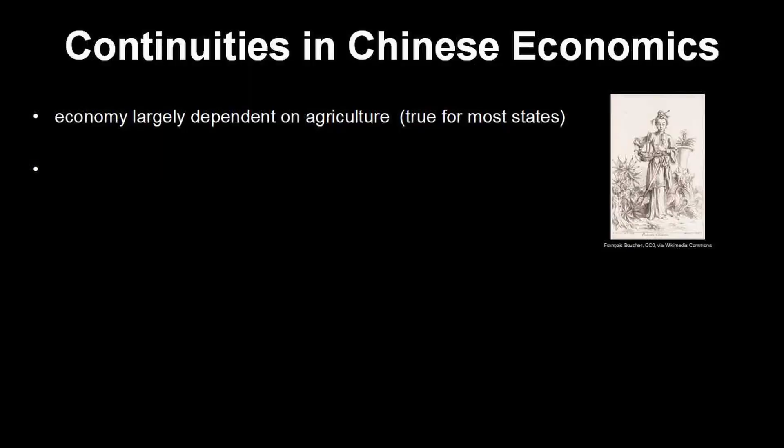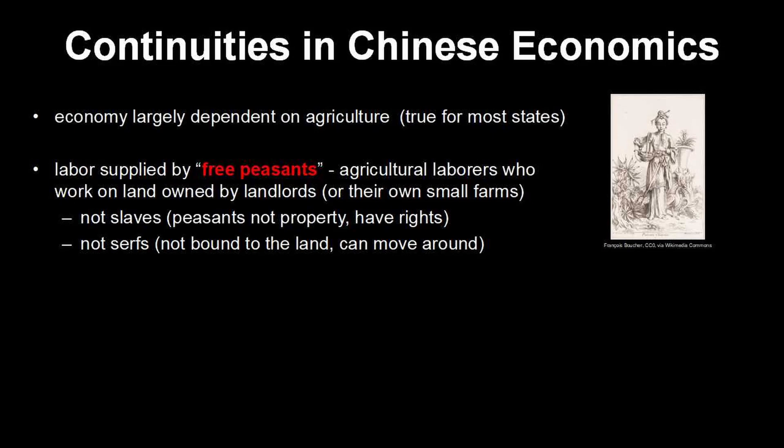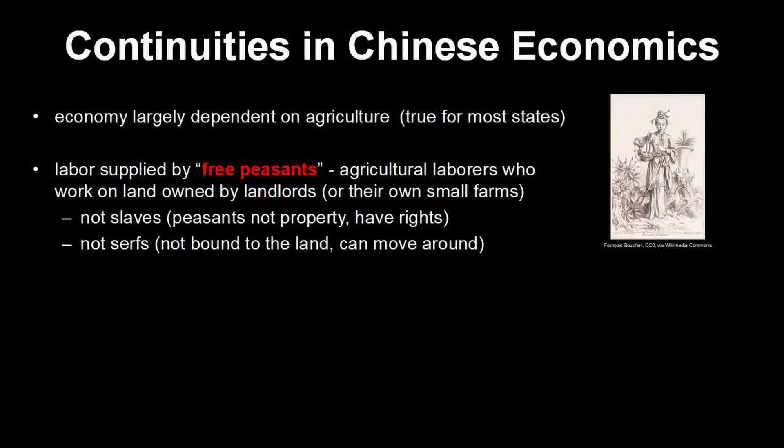Let's talk about a continuity in China. When you think about Chinese history, you should always be thinking about continuities. One thing that stays the same in Chinese economics is that much of the economy depends on agriculture — true for most states in Unit 1, whether they're farming rice, wheat, or other staple crops. These farms are mostly worked by peasants who generally work on farms owned by landlords. Free peasants means they're not slaves, not owned by their landlords, and they have some rights. Also, they're not serfs, meaning they're not bound to the land.